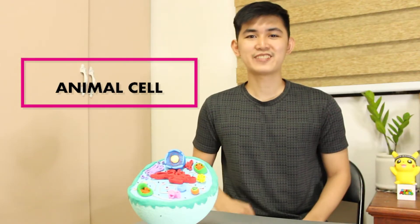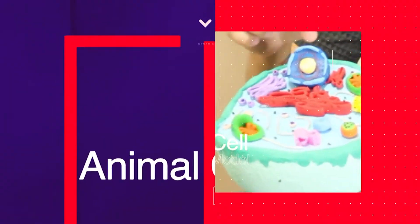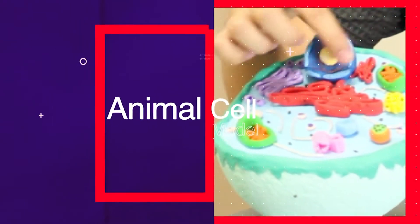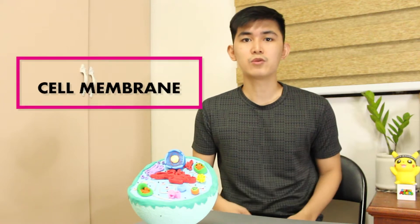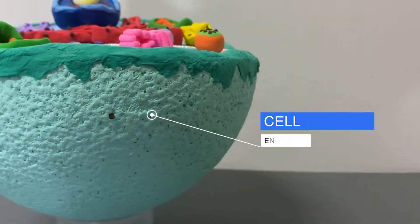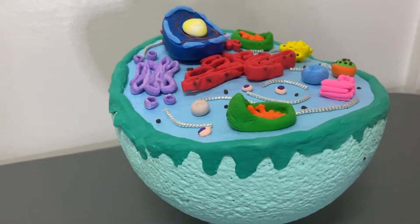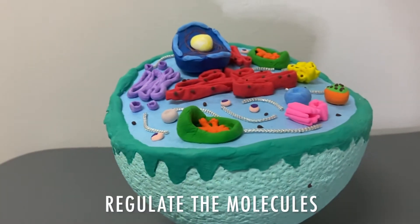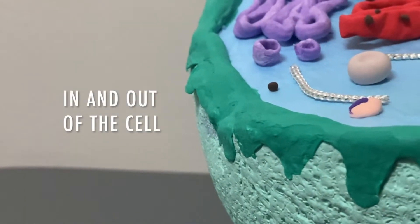So, let's start! The first part that I'm going to tackle is the cell membrane. Its function is to enclose and protect the cell organelles and also to regulate the molecules that pass in and out of the cell.